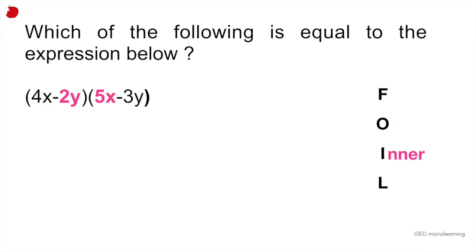The next set of numbers is the inner numbers. That's the I of FOIL, inner. In this case, the inner numbers are 2y and 5x. So minus 2y multiplied by 5x is negative 10xy. And finally, the last letter of your acronym of FOIL is LAST. The last numbers would be minus 2y multiplied by minus 3y, which would give you positive 6y squared.